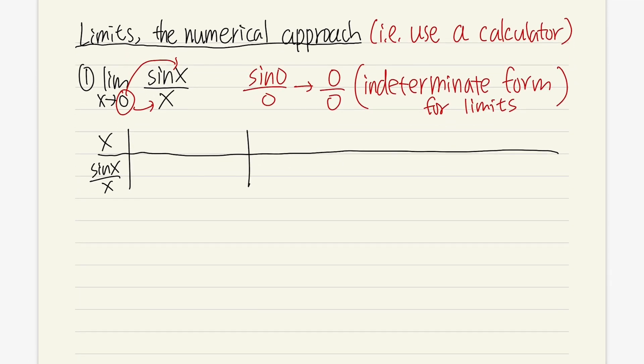The first one is for x, and then the second one here is for the function sin x over x. And let's have five numbers. Here, I can put zero right in the middle, and then we can approach zero from the right-hand side and also the left-hand side.